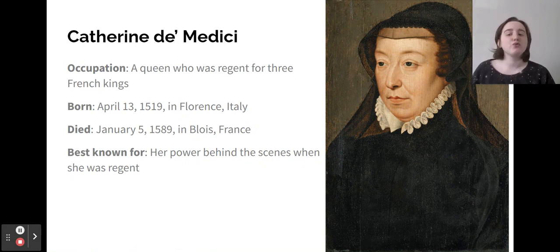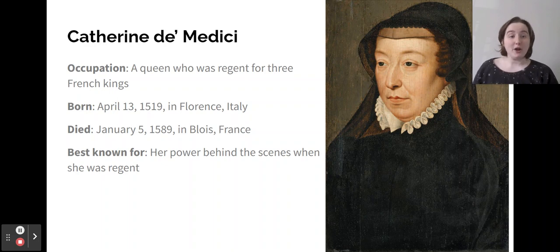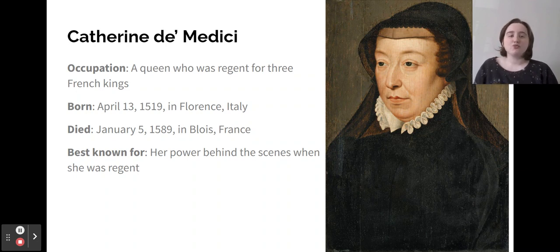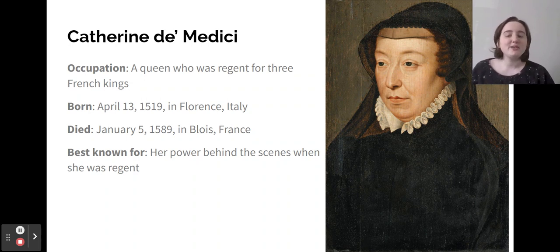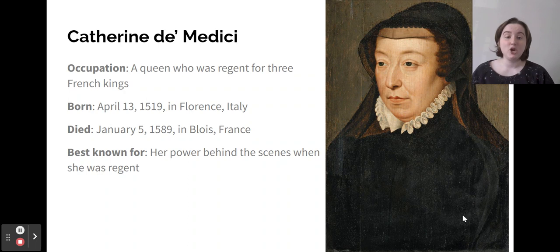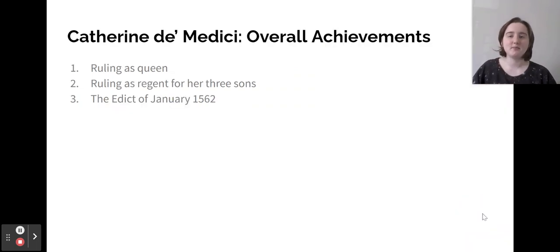A regent is someone who runs the country when a king or queen is unable to — usually because they are very sick, or in Catherine's case, because the leader is a child. She was born April 13th, 1519 in Florence, Italy, and she died January 5th, 1589 in Blois, France. She is best known for her power behind the scenes as regent — she wasn't the actual queen, but she had all the power and was controlling the government. Her overall achievements were ruling as queen, ruling as regent for her three sons, and the Edict of January 1562.